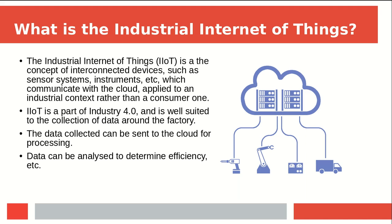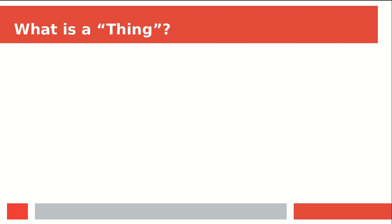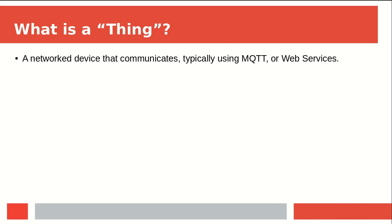It's also worth mentioning that the concept of data logging does overlap with the data output that some industrial machines are capable of, although the specifics of how this is implemented might be different. Fundamentally, an IIoT device is a networked device that communicates with the cloud, and typically it does this either by using a protocol called MQTT — which is the more normal approach — or by using other web services. I'll talk more about MQTT in a moment.